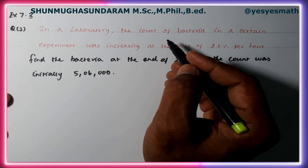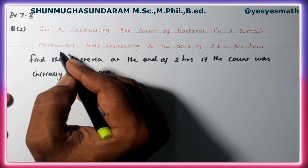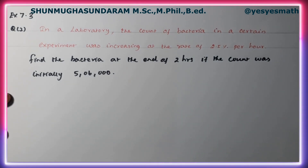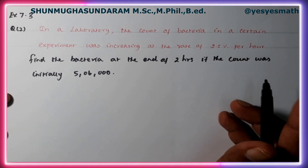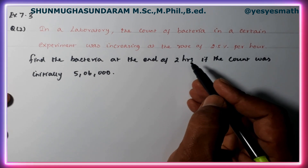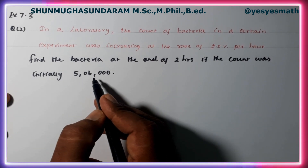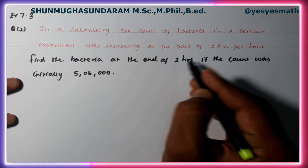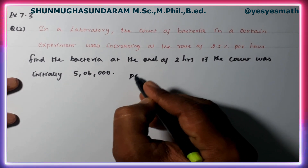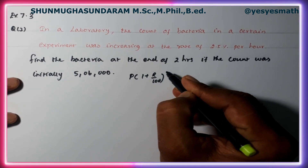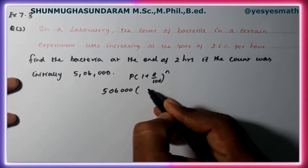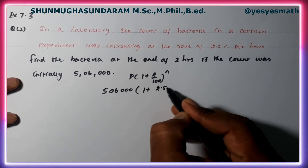In a laboratory, the count of bacteria in a certain experiment was increasing at the rate of 2.5% per hour. We need to find the count of bacteria at the end of 2 hours.